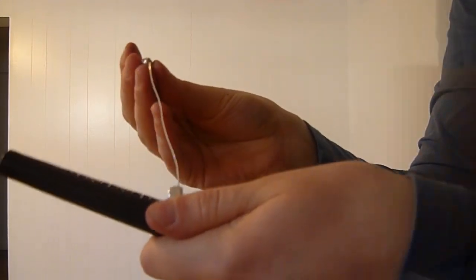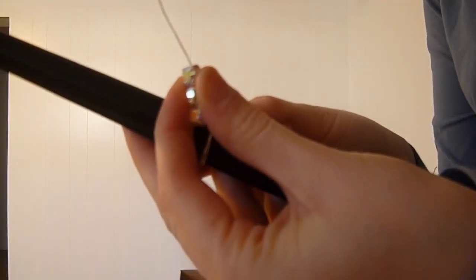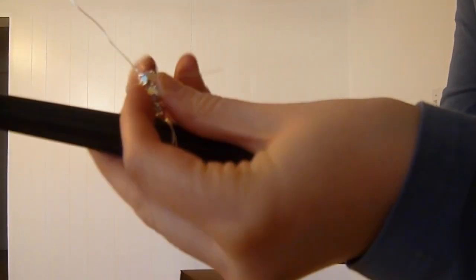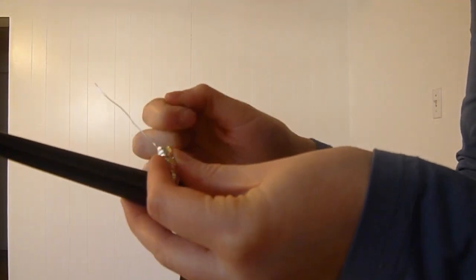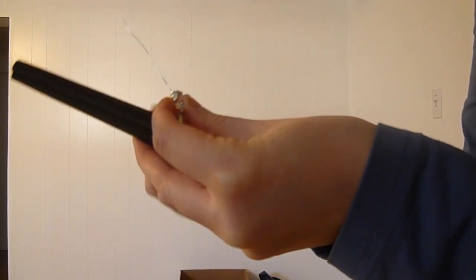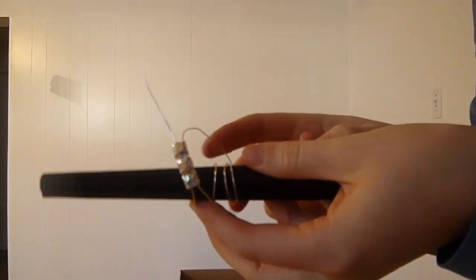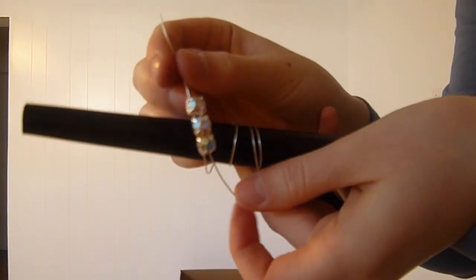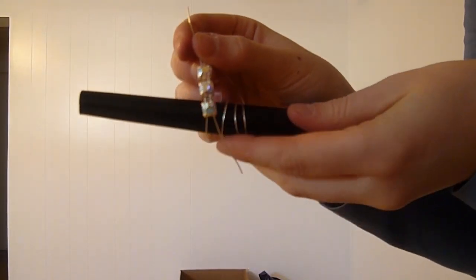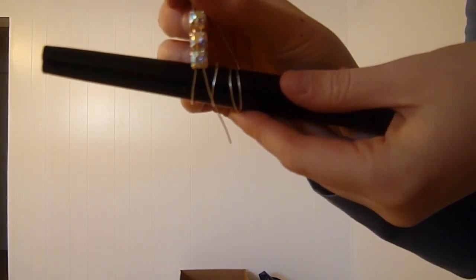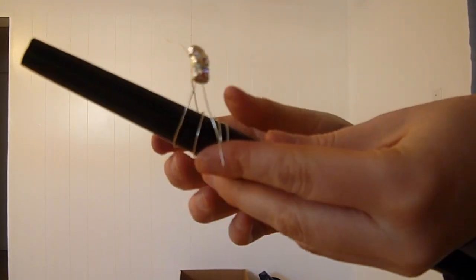Once your beads are all strung on the top portion, you'll take the right side of your wire and string it through the bottom portion of the bead. All right, so when they're all strung through, that's what it's going to look like, and now we're just going to fix up the ring.